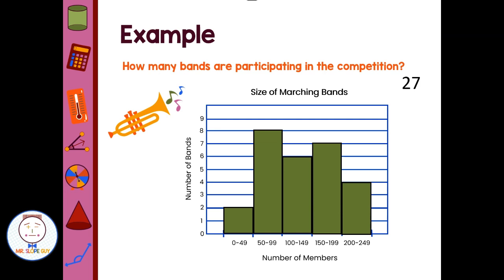Let's do another question. How about, how many bands have 100 or more members? Well, this group doesn't count. This group doesn't count. But once we get to here, 100 to 149, 150 to 199, 200 to 249, all of these three bars on our histogram are 100 or more. So we have six plus seven is 13 plus four is 17. So we have 17 bands that have 100 or more members.